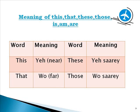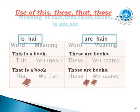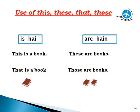'Is' means 'hai' and 'are' means 'hain'. This is a book — yeh ek kitaab hai. These are books — yeh saari kitaabein hain. That is a book — woh kitaab hai. Those are books — woh saari kitaabein hain.